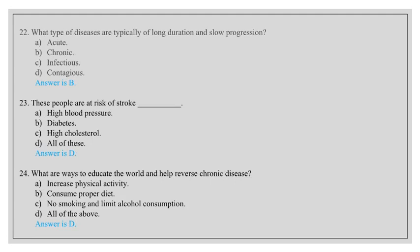What type of diseases are typically of long duration and slow progression? Acute, chronic, infectious, contagious. Answer is B, chronic. These people are at risk of stroke: high blood pressure, diabetes, high cholesterol, all of these. Answer is D, all of these.